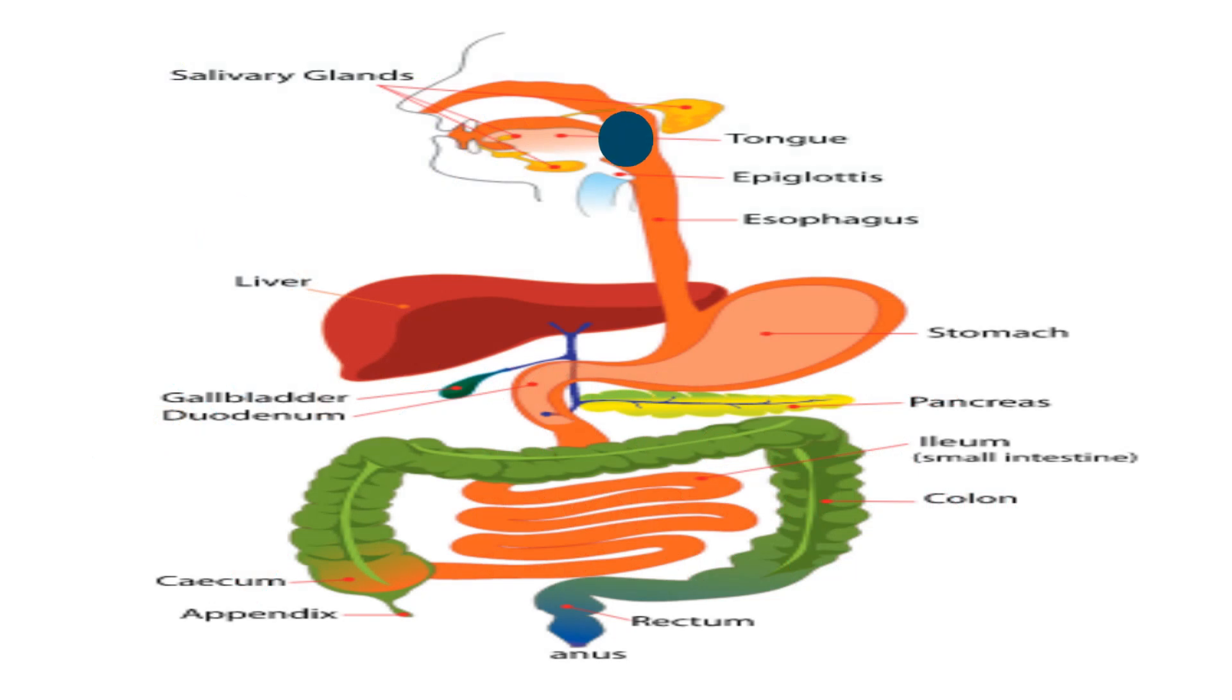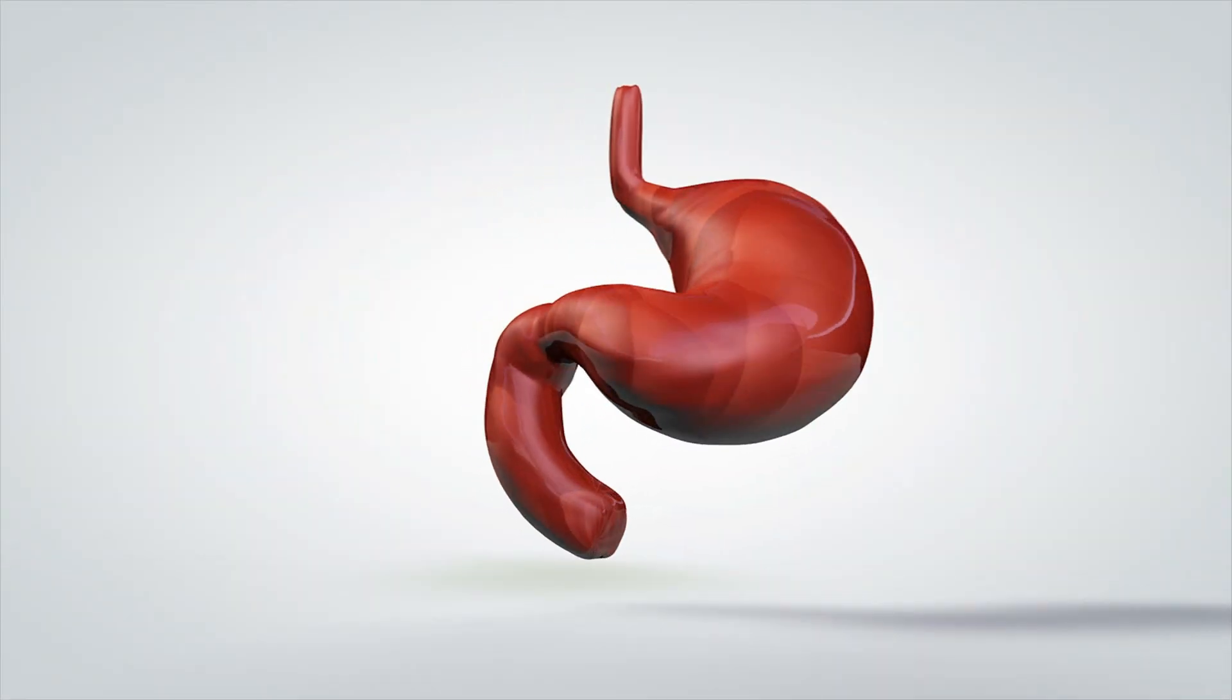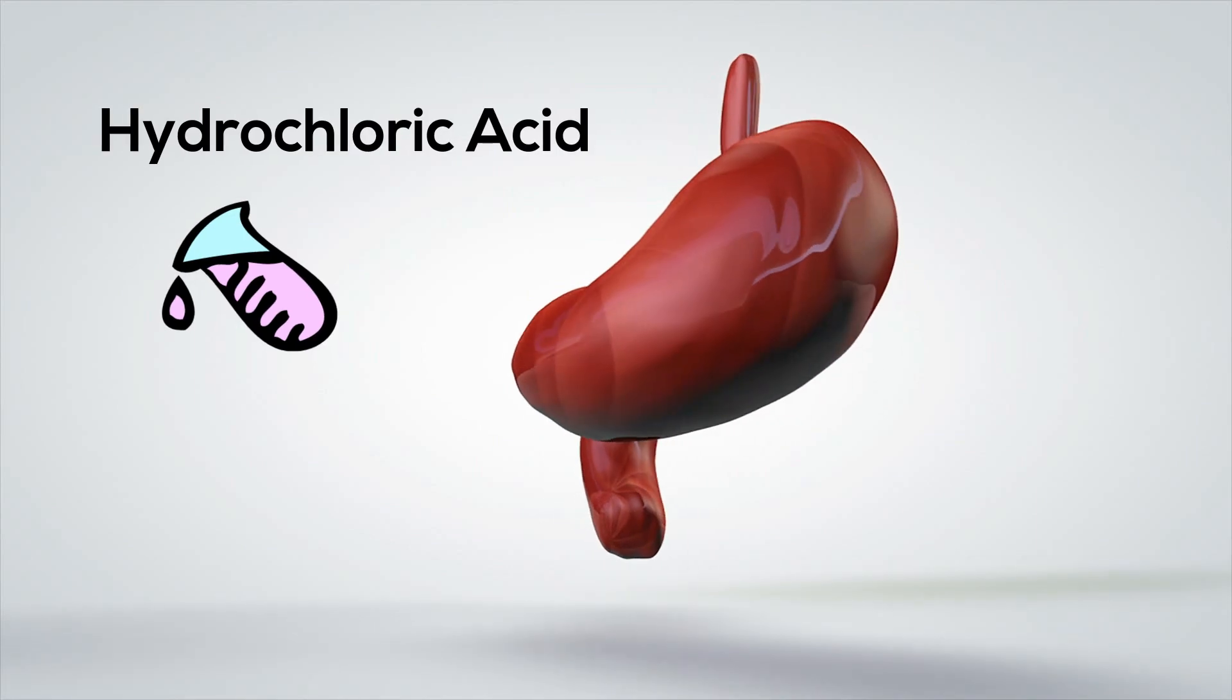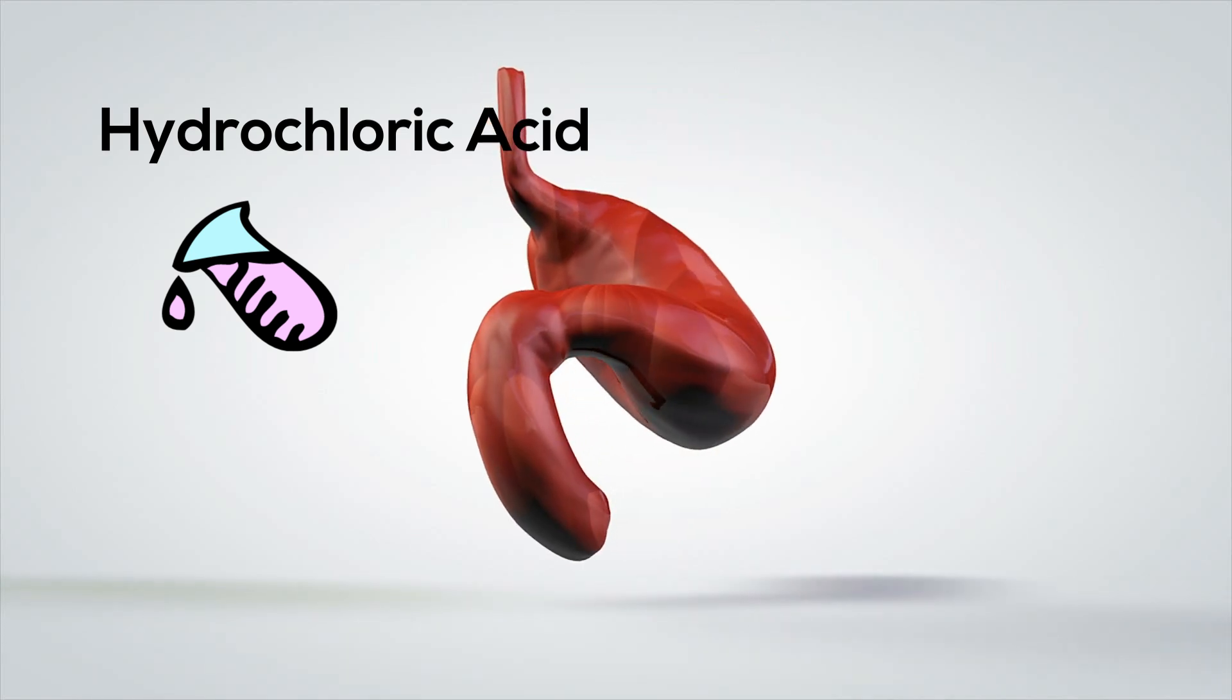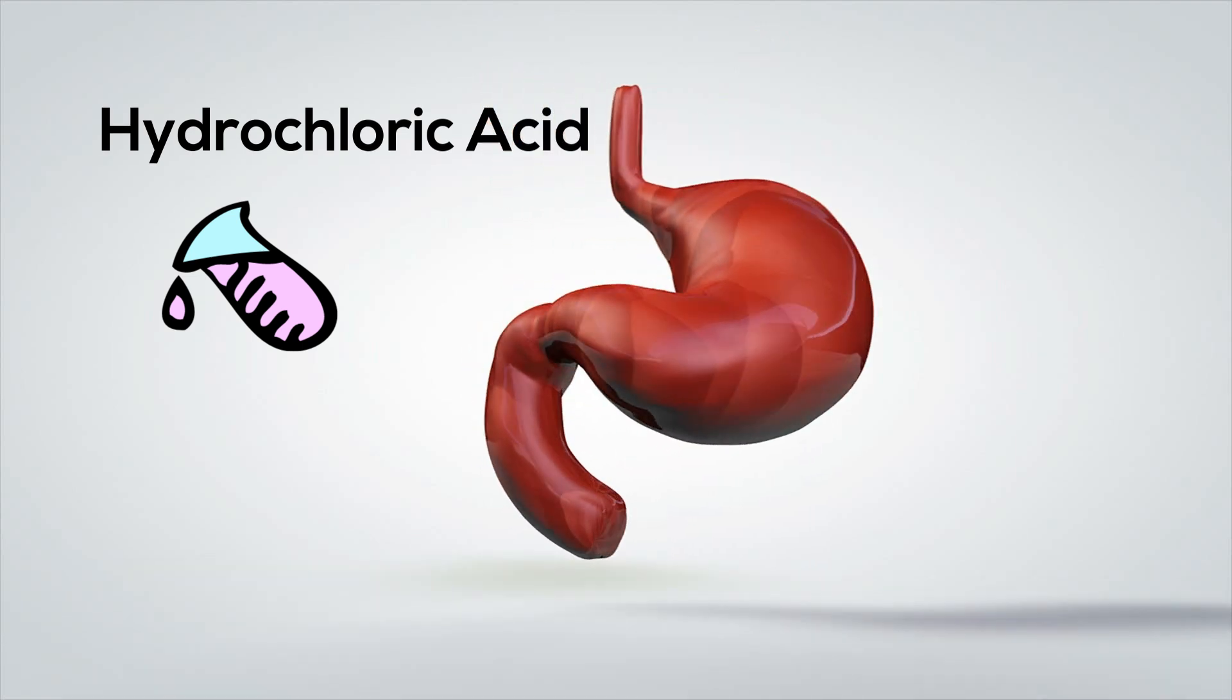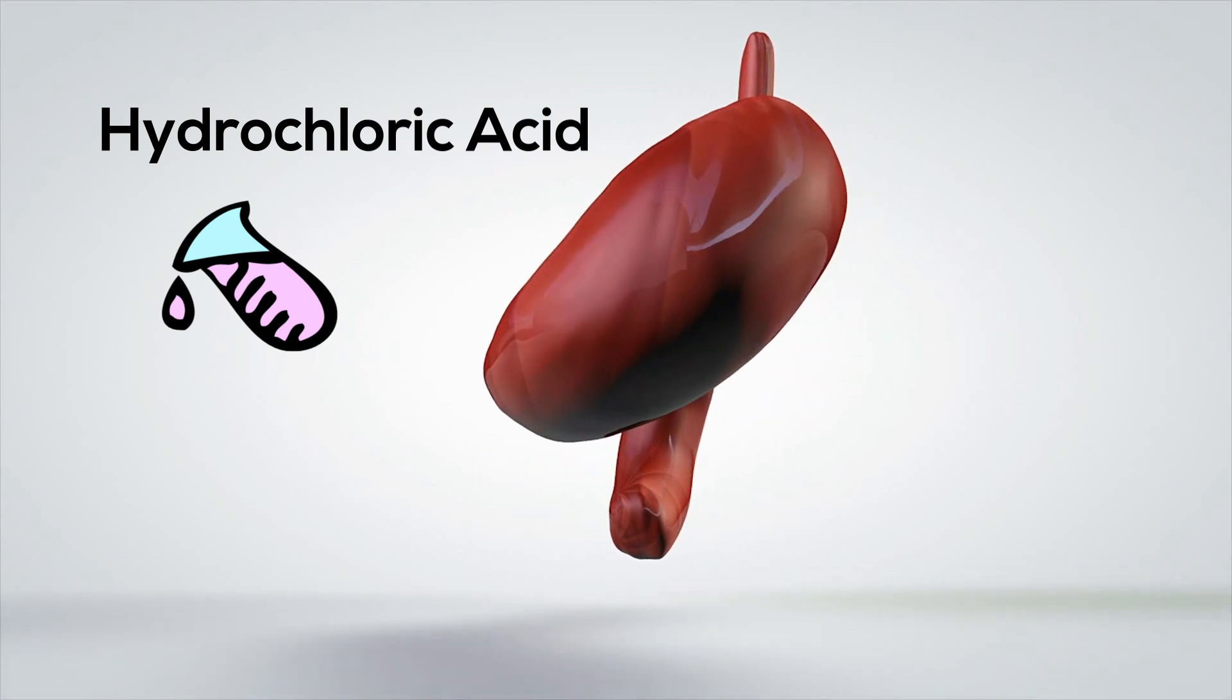After passing through the esophagus, the food enters the stomach where it is churned into a thick liquid called chyme. Hydrochloric acid, excreted from parietal cells, lowers the pH in the stomach and this helps increase the effectiveness of pepsin, which is an enzyme that begins the digestion of proteins.